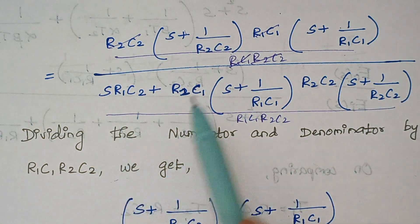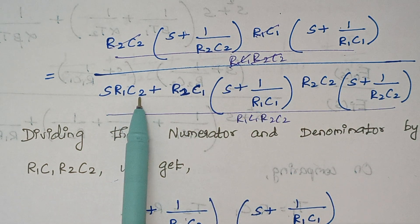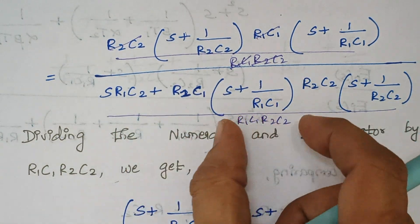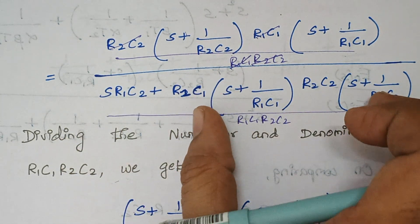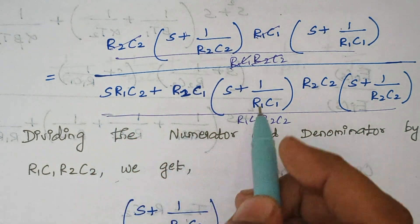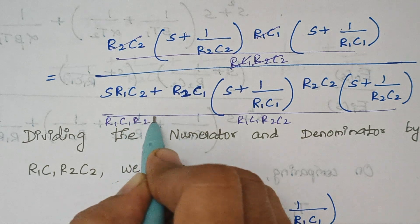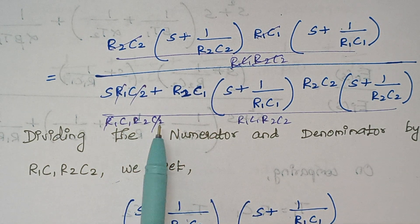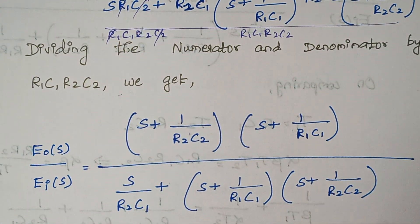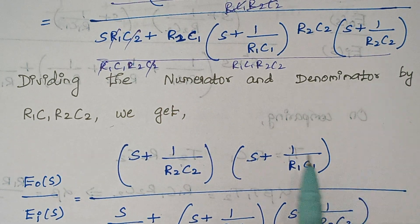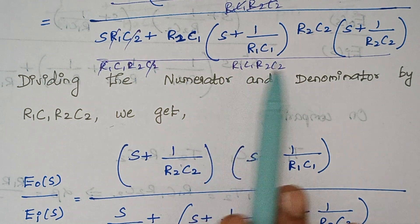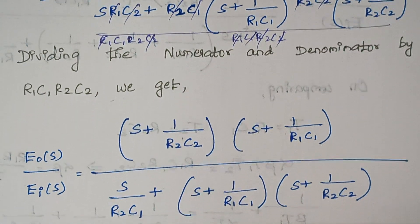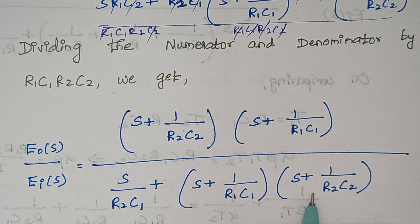After further cancellation of common terms — R1C2 cancels, leaving C1R2 — the simplified transfer function numerator contains (s + 1/R1C1)(s + 1/R2C2). Expanding the denominator by multiplying the two factors gives S² plus S·(1/R1C1 + 1/R2C2) plus 1/(R1C1·R2C2). The S terms are grouped with S taken common, leaving the coefficient as (1/R1C1 + 1/R2C2 + C1R2/(R1C1·R2C2)).